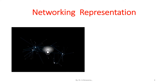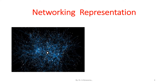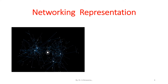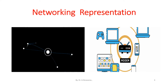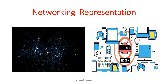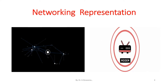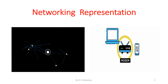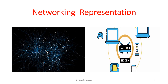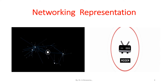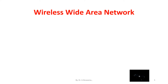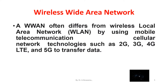In this diagram we are going to see the computer networks connecting representation. Here we are seeing how the modem — that is modulator and demodulator — connects the devices, including home appliances and other devices in a home wireless wide area network.